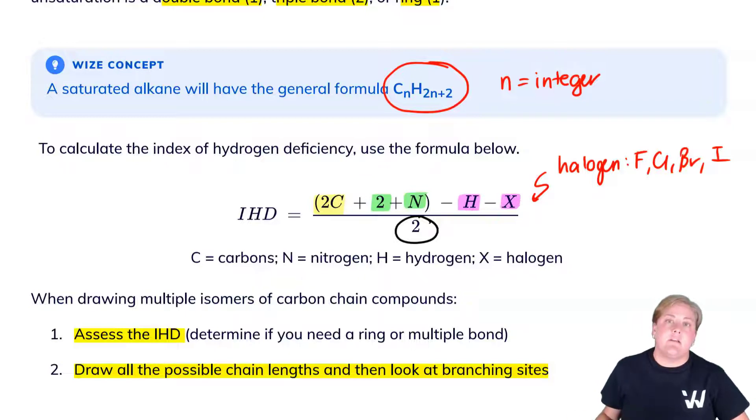So constitutional isomers are our first type of isomer, and they are those which have the same molecular formula but different bond connectivity. We also introduced the concept of the hydrogen deficiency index and the calculation for it.